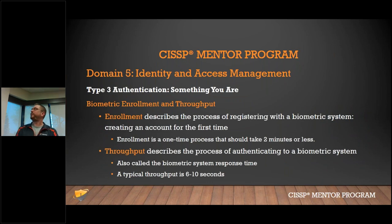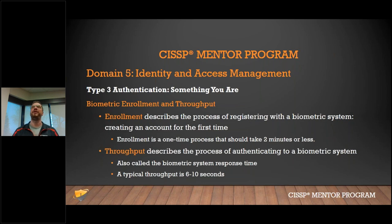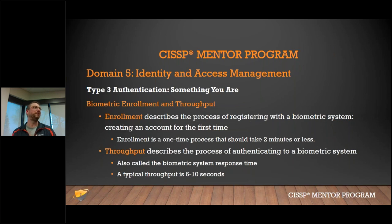Biometric enrollment should be quick and easy — present your fingerprint several times until the system successfully maps the data points. Throughput measures how quickly the system responds after you authenticate. A 20-second response is unacceptably slow — users won't tolerate it. Regarding phones, courts have ruled that fingerprints are like a physical key: you can be compelled to provide your fingerprint to unlock your phone, whereas a password is protected by the Fifth Amendment.